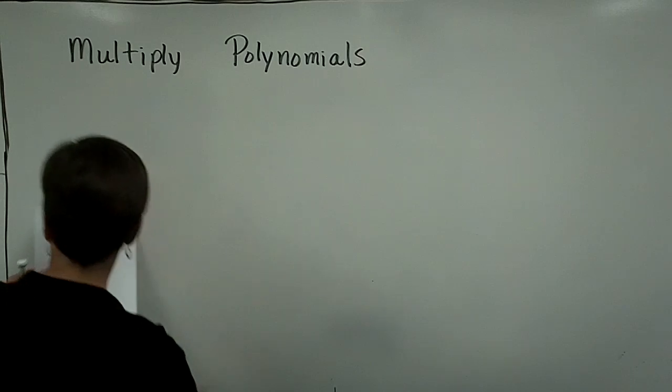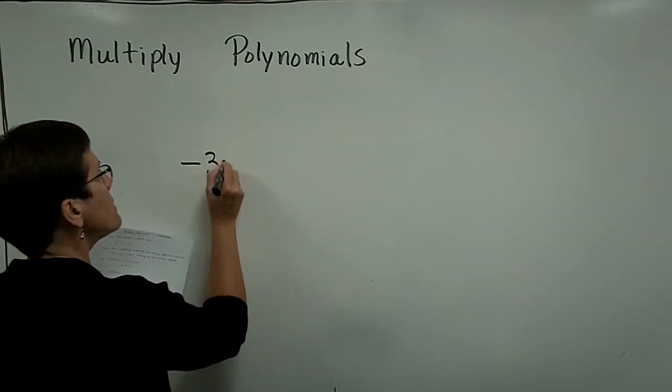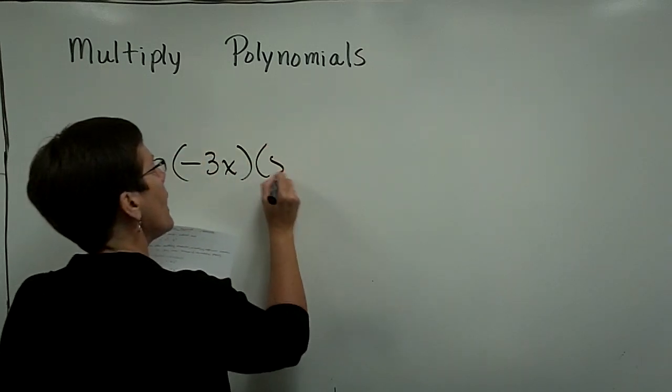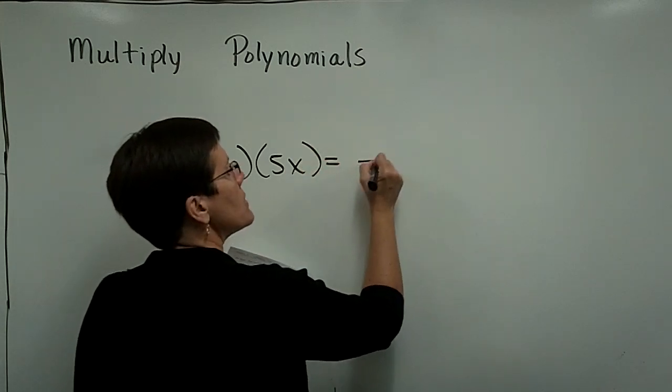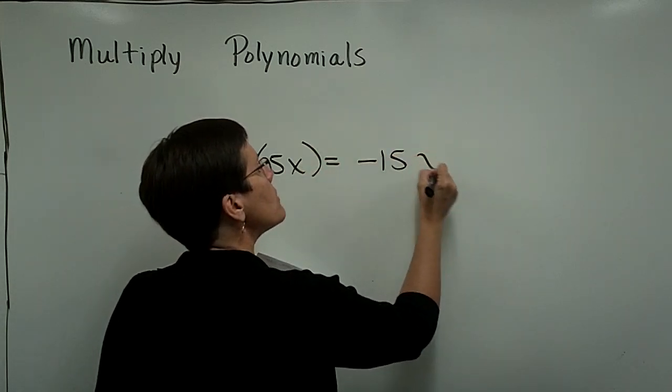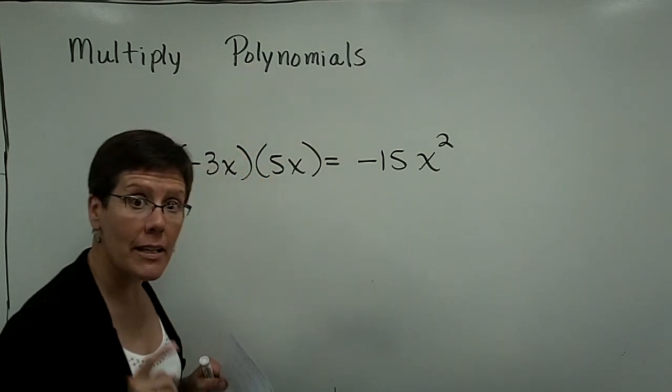So if I asked you to take a negative 3x times 5x, the negative 3 times 5 is a negative 15, and x times x is x to the second power.